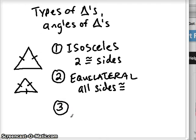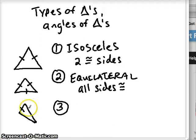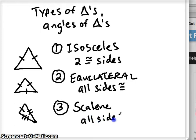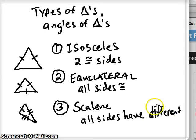Another type of triangle is if each side is a different length. Here's where we use different hash marks — this side is not the same as the next one, so I use two hash marks there. These two sides are not the same as the third one, so I use three hash marks for that last one. That symbolizes that all the sides have different lengths. This is known as a scalene triangle, meaning no sides are congruent.